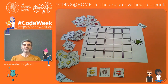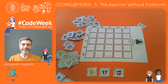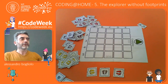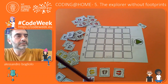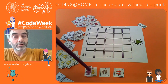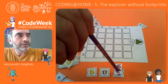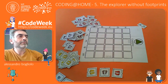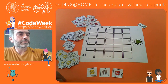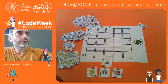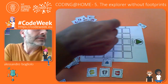Welcome back to Coding at Home. Today we are going to play a game called The Explorer without Footprints, but we will start by just playing The Explorer and I'll ask Anna to play this game for us, remembering that we have three types of instructions: the yellow ones meaning turn left, the grey one meaning go straight, and the red one meaning turn right. Using these three types of tiles, Anna has to explore the checkerboard from this starting point to this destination.